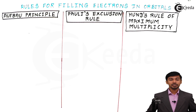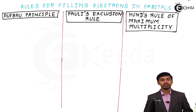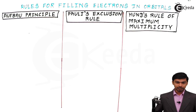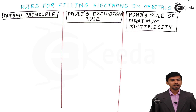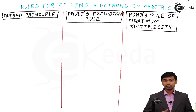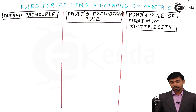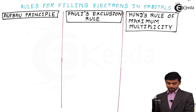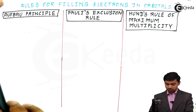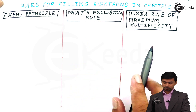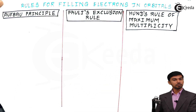Hello everyone, today we are going to see about rules for filling electrons in different kinds of orbitals. Previously we already have studied the fundamental structure of an atom, including the concept of shells, subshells, and orbitals. For filling electrons in every orbital we are supposed to follow three principles: the Aufbau principle, the Pauli's exclusion rule, and Hund's rule of maximum multiplicity.